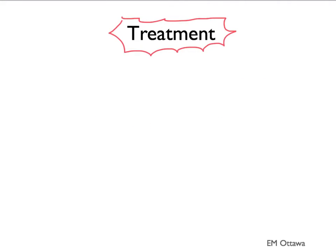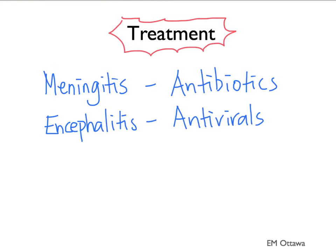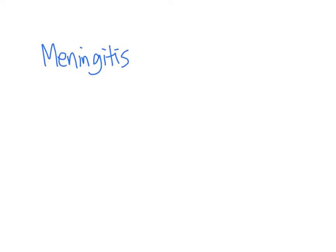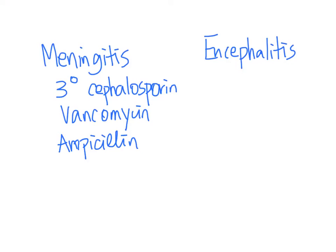The main treatment is antibiotics for meningitis and antivirals for encephalitis. Even though some meningitis would turn out to be not bacterial in origin, we still want to start them on antibiotics, since the mortality and morbidity for bacterial meningitis is so high. Antibiotic choice for meningitis can include a third-generation cephalosporin, vancomycin, and depending on the age group, ampicillin. For encephalitis, the choice of antiviral is usually acyclovir.